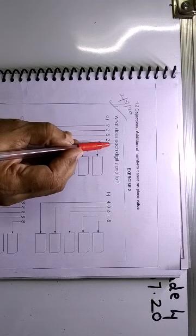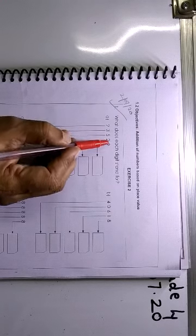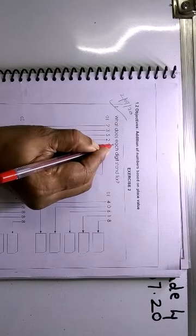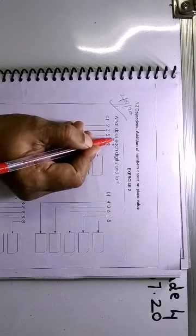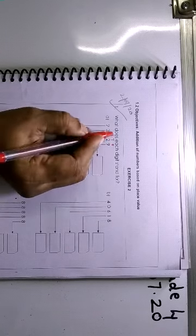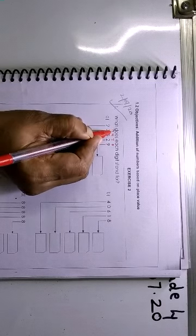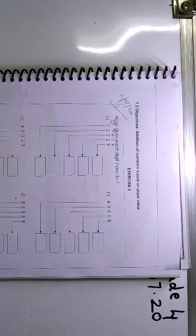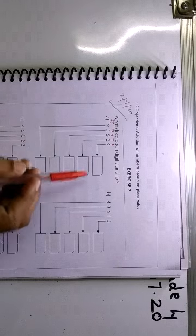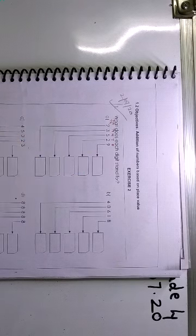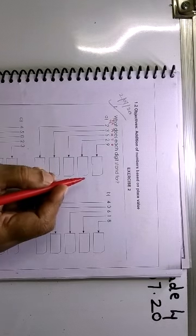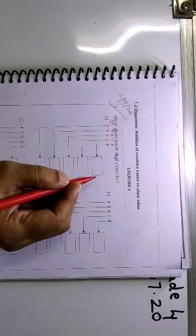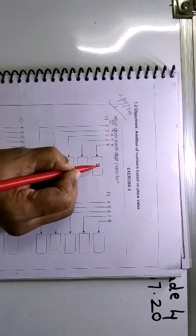This is the ones place or the units place. Then we have the tens place. This is the hundreds place. Then we have the thousands place. And finally we have the ten-thousands place. So now the place value of 9: 9 into 1. Why? Because it is in the ones place. So the place value of this will be only 9.